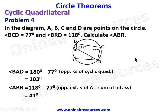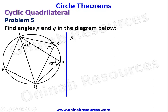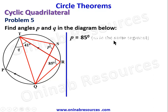Problem 5 has a more complex diagram; we need to find angles P and Q. For P: it shares the same base side as the angle of 85 degrees, and both angles are in the same segment. Therefore P equals 85 degrees — angles in the same segment are equal.